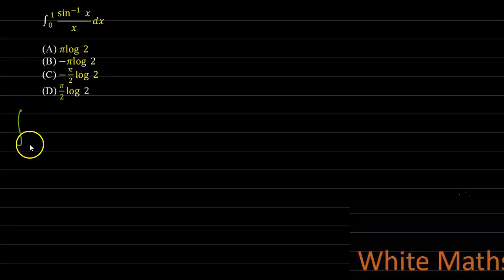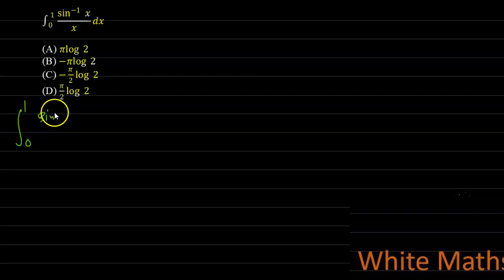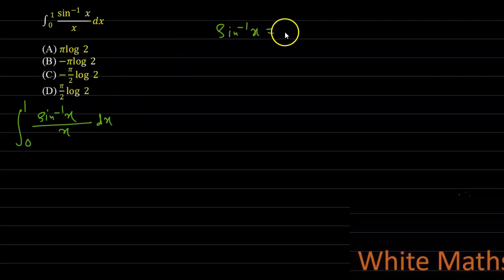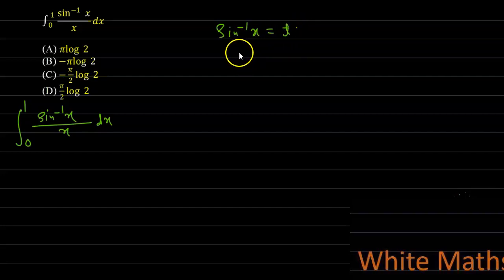The integral is limit 0 to 1 of sine inverse x divided by x dx. To solve this integral, consider the substitution sine inverse x equal to t. On taking sine of both sides, we get x equal to sine t.